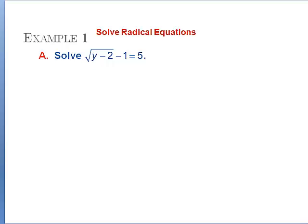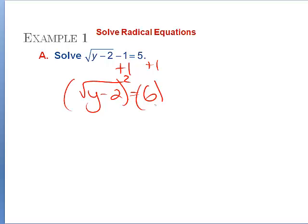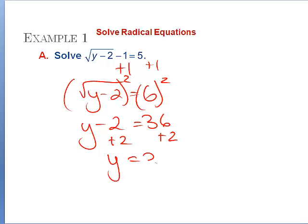Here's the first question. We want to isolate the radical, so we're going to add 1 to both sides. We're left with √(y−2) = 6. Then, to eliminate the radical, we square both sides, and whatever we do to one side we do to the other. We're left with y − 2 = 36. We add 2, so y = 38.